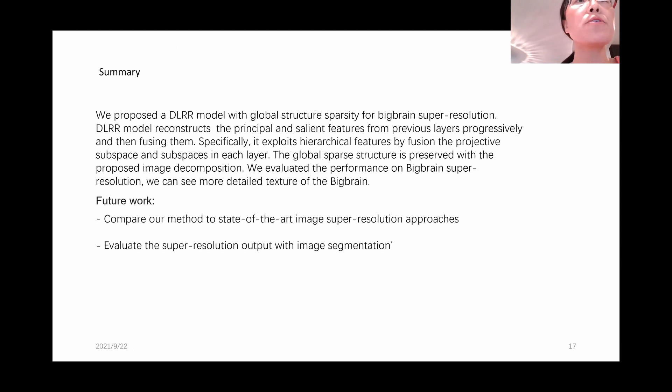In summary, we proposed the deep latent low-rank representation model with global structure sparsity for BigBrain super-resolution. The model reconstructs the principal and salient features from the previous layers and the current layer.